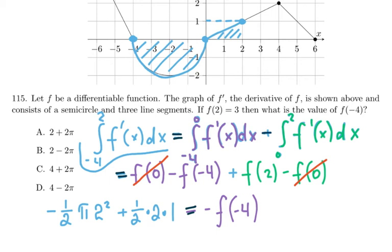And then I have f(2), so I have plus f(2). And f(2) is given as 3, so that's plus 3. So I can solve this equation for f(-4).